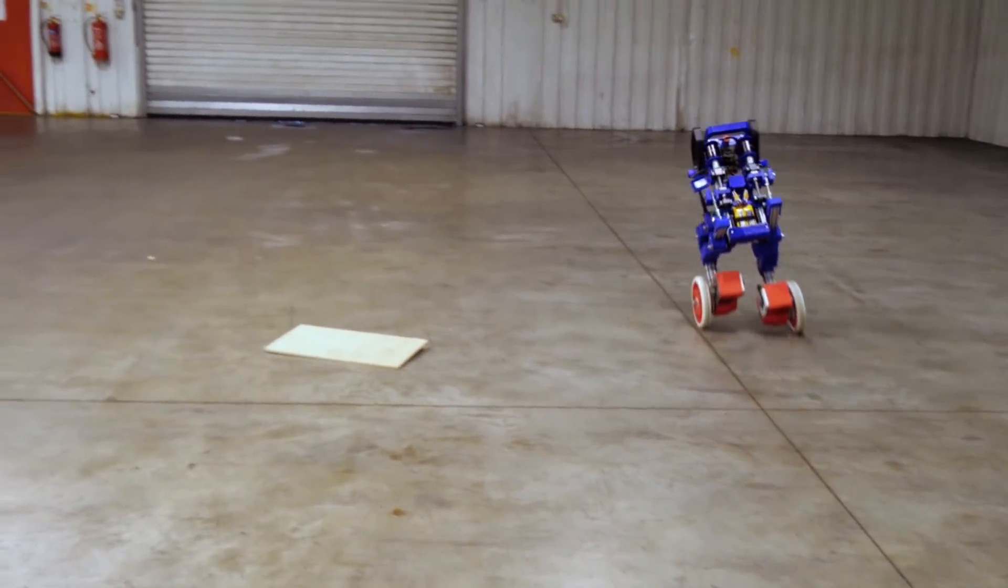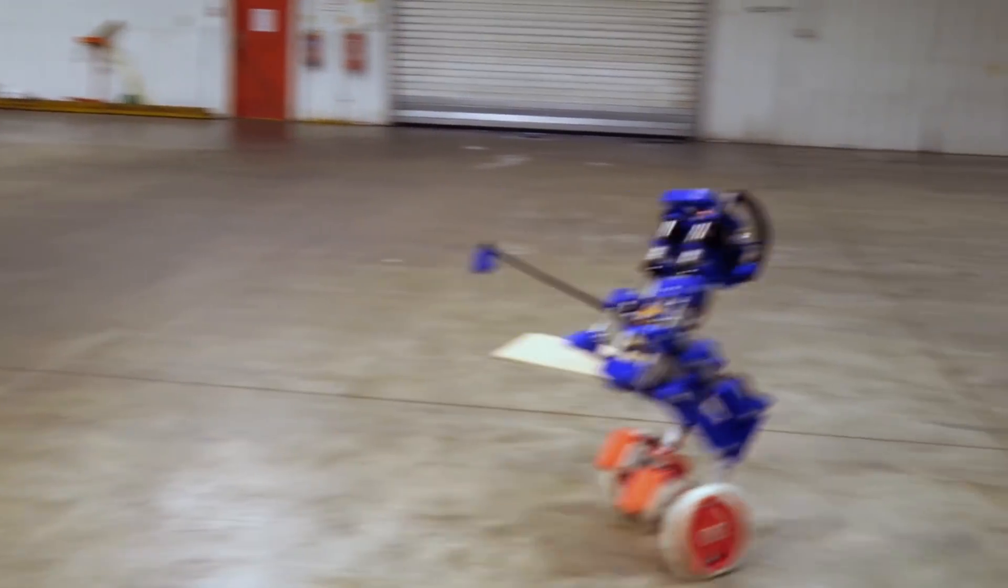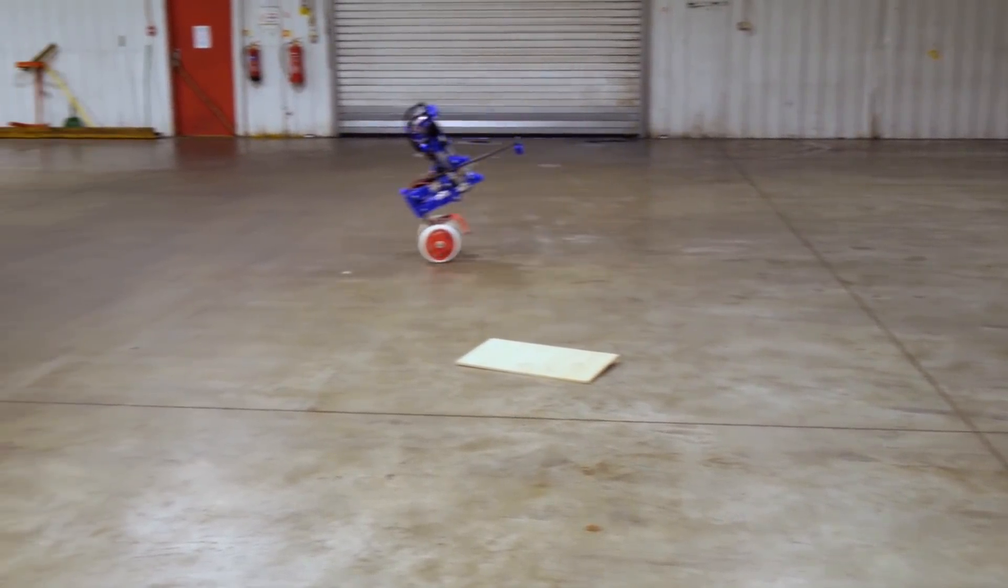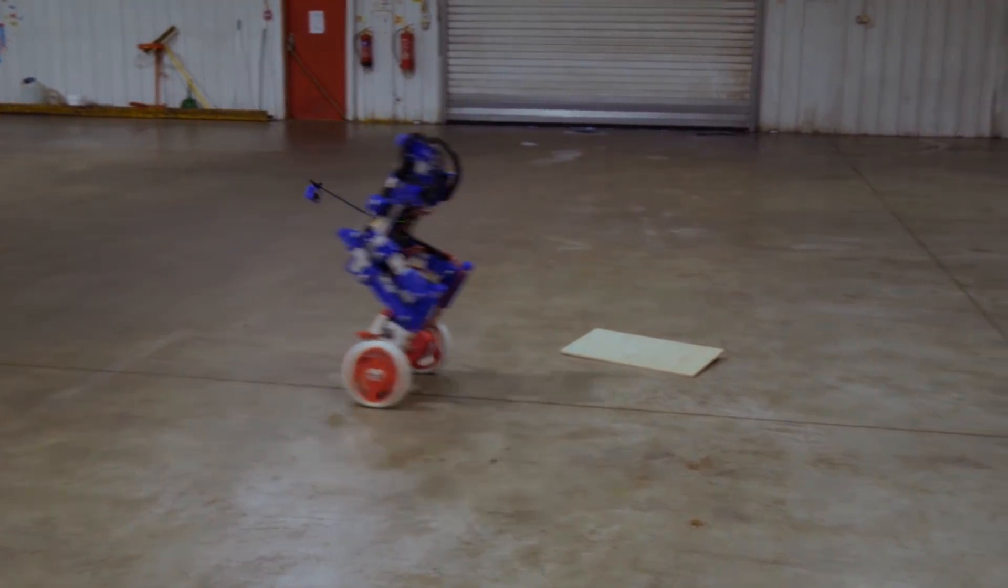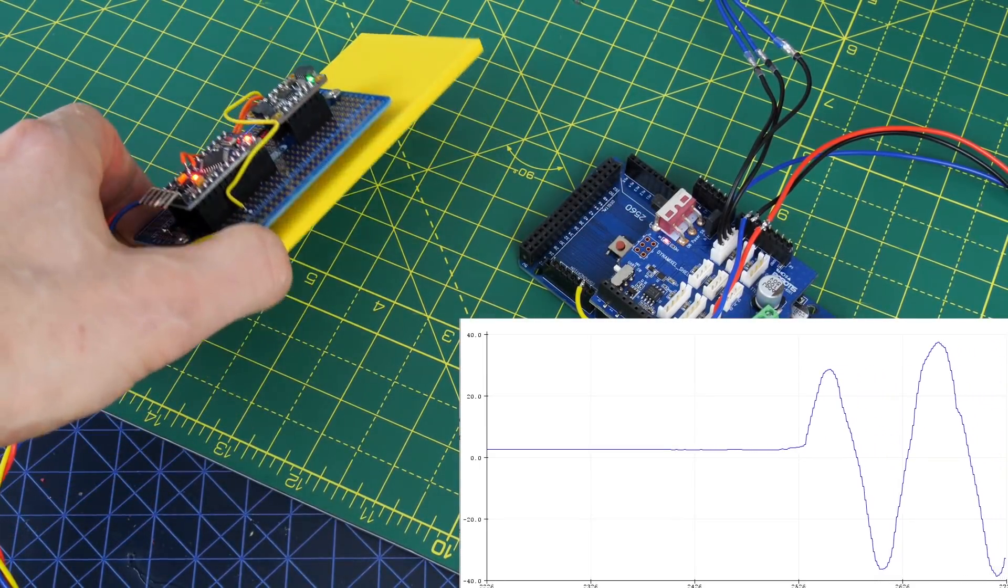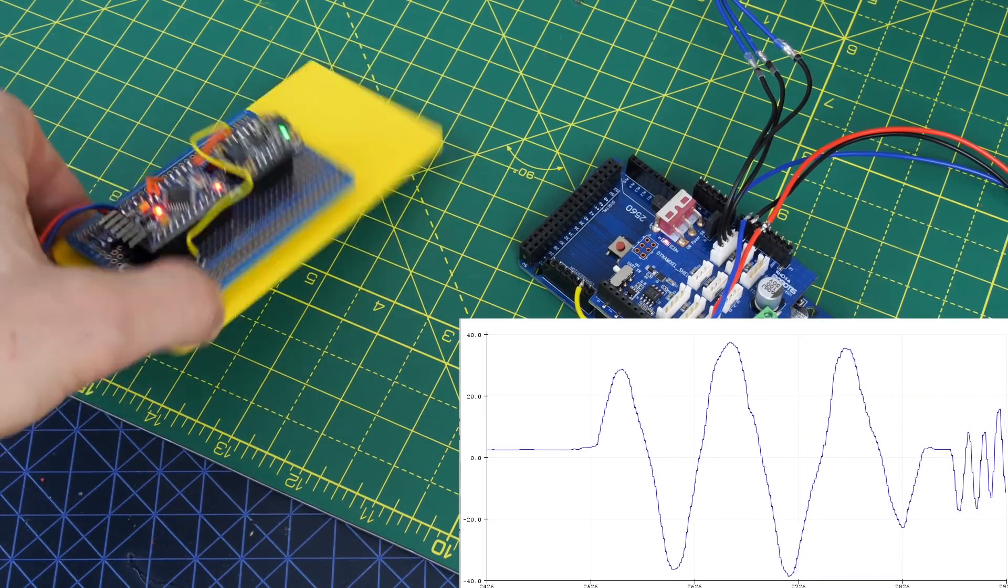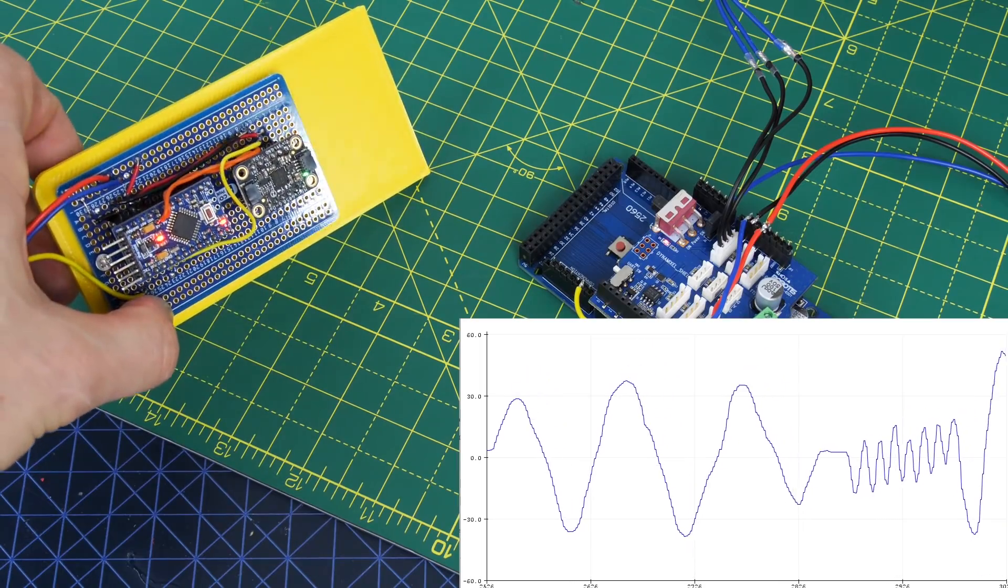I've built several balancing robots in the past which were pretty stable. These typically use an inertial measurement unit which consists of a solid state gyro and a solid state accelerometer. The data from both these sensors is mixed together to give us a reliable measurement of the absolute angle of the robot so we can drive the wheels and compensate accordingly to make the robot balance.